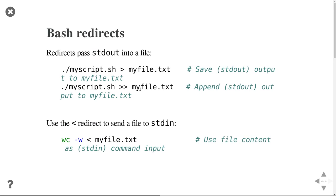Pipes pass information from standard out to a new program. Another thing you can do is save the standard output into a file - this is called redirection, and the syntax is simply the greater-than symbol. So if I have my script and want to store its output into myfile.txt, it redirects all standard output into that file. You can also use a double greater-than sign to append to an existing file instead of overwriting it.